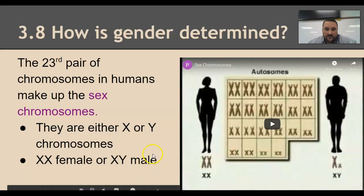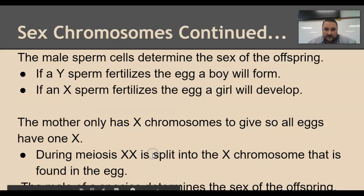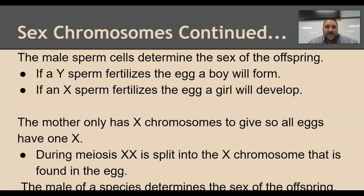If the egg is fertilized with a Y sperm, it will be a boy because it'll be XY. Since the male sperm determines the sex of the offspring, it has nothing to do with the egg cells and you can't pick. If it's a Y sperm it's a boy, if it's an X sperm it's a girl. If you are XX you are a girl; if you are XY you are a boy.